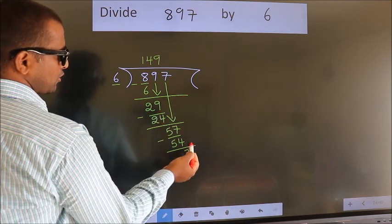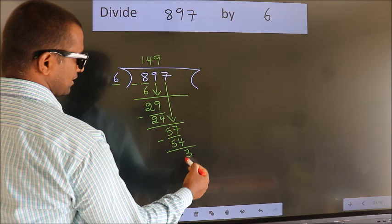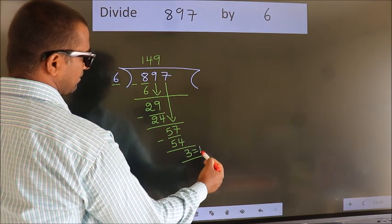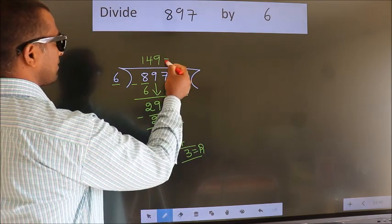No more numbers to bring down. So we stop here. This is our remainder. This is our quotient.